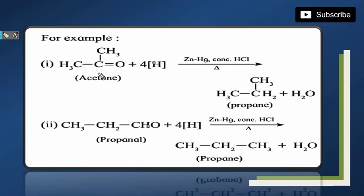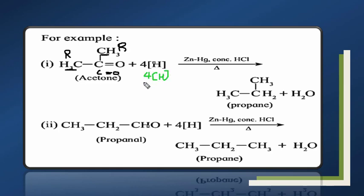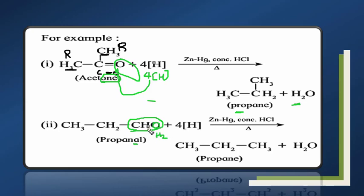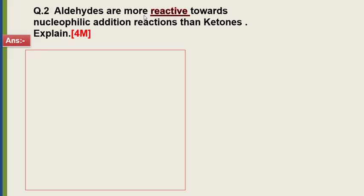Sabse pehle acetone — yaani ketone. Carbon oxygen ke saath bonding karke carbonyl group banata hai. 4 hydrogen mein se 2 ne oxygen ke saath bonding karke water molecule bana diya, aur jo 2 bache unhone oxygen ko replace karke propane bana diya. Yeh ketone ka example tha. Ab aldehyde ka example — CHO group last mein dikhta hai. Oxygen ko 2 hydrogen se replace karte hain, aur already ek hydrogen present hai, to CH₃ ban jata hai aur water molecule banta hai.